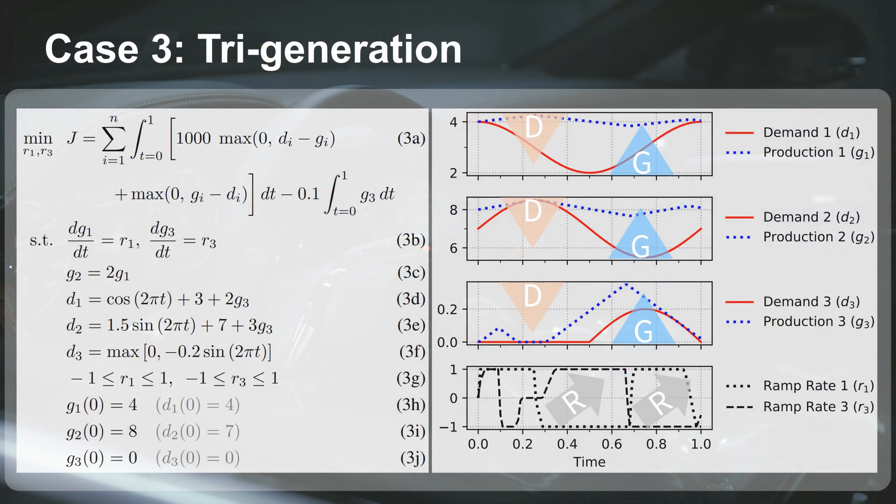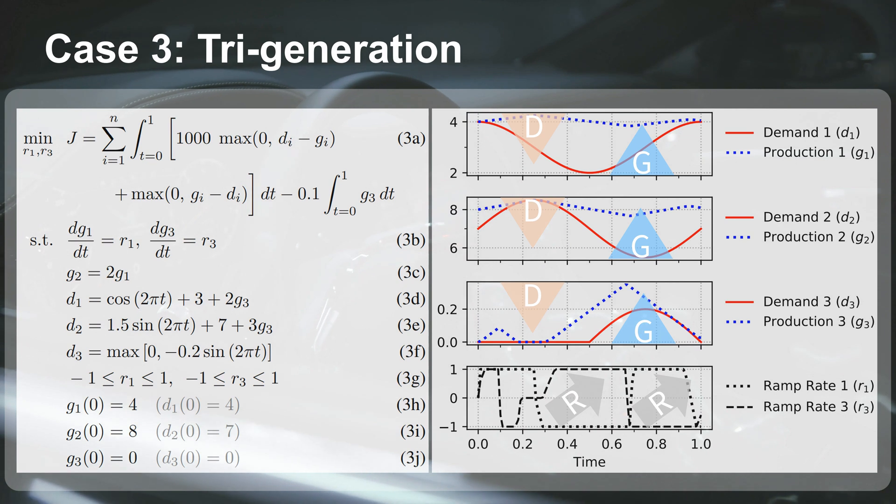Let's go on to the next one. We have a tri-generation now where we have three things that we are producing, and we have two generators. So solar with high-temperature electrolysis to produce hydrogen. So maybe the third one is our hydrogen. We have production and demand maybe in the later part of the day. That's when all the vehicles need to recharge. And this might be electricity and heat.